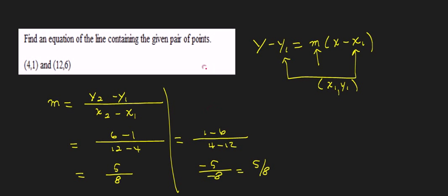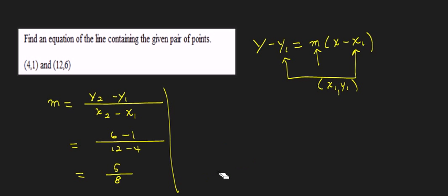All right, so we know what the slope is. And now we want to use this y minus y1 equals m times x minus x1. But in order to use that, we need to know a point on the line. We have two points and we can use either one of these and we'll get the same answer. So let's just use the one with the smaller numbers.